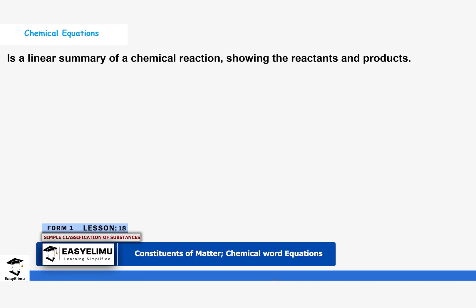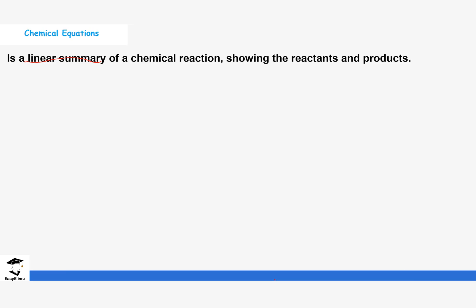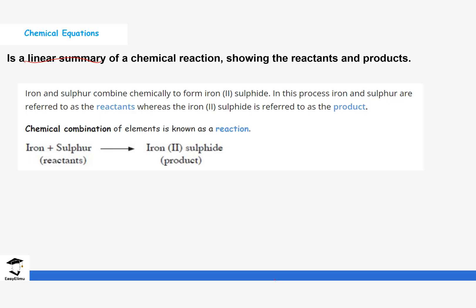A chemical equation is a linear summary of a chemical reaction. It shows the reactants and products of a certain chemical reaction. So if we are reacting some compounds, we are able to show the ones that are reacting and after the reaction, what products are being formed. For example, the reaction between iron and sulfur. Remember we said this will form a compound and it ends with an -ide. We mentioned that in the previous lesson.